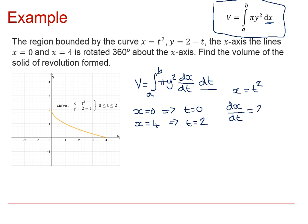So now we can do our volume between 0 and 2 of pi times Y squared, Y is 2 minus T, times our dx/dt with respect to T.